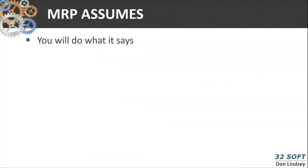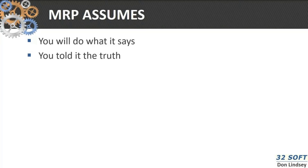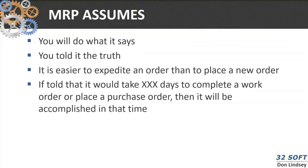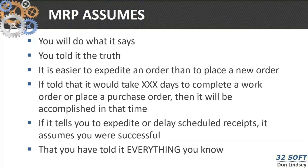There are some key assumptions MRP makes. Number one: it assumes you're going to do what it says. It assumes you've told it the truth, so you need to make sure that what you are telling the system is accurate in terms of lead times, lot sizes, and so on. There's an assumption that it's easier to expedite an order than place a new order — we'll talk about that in terms of realignment or rescheduling messages. If you told MRP it's going to take a number of days to place an order or complete a work order, it assumes it will be done in that time. As one of my old supply chain managers used to say: have you told MRP everything you know? If you haven't, you need to make sure MRP knows it.